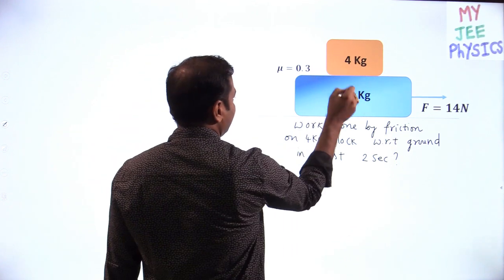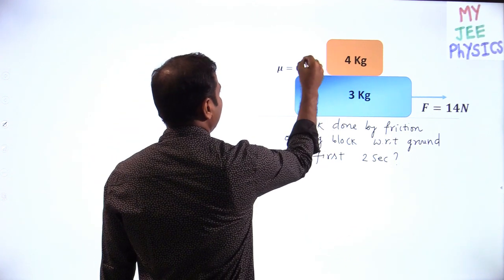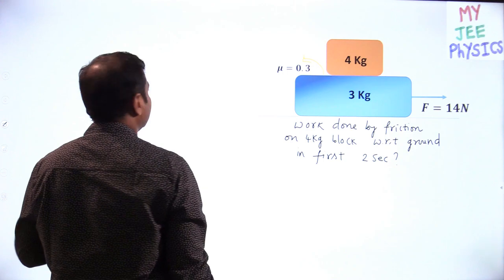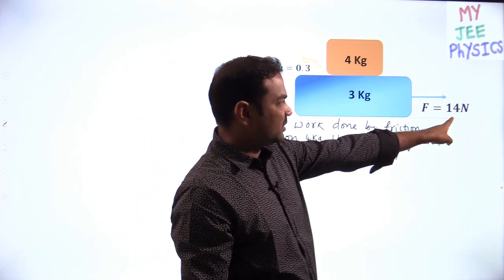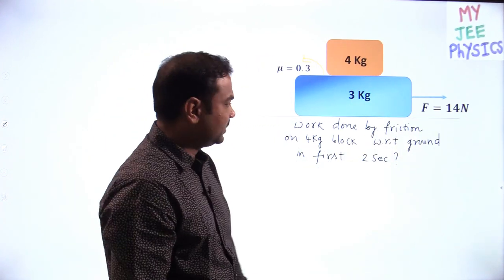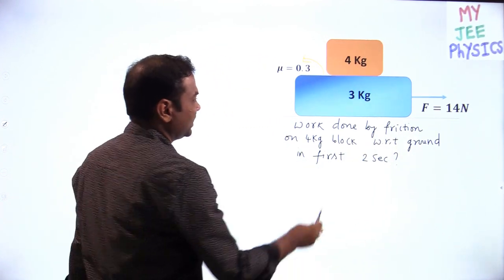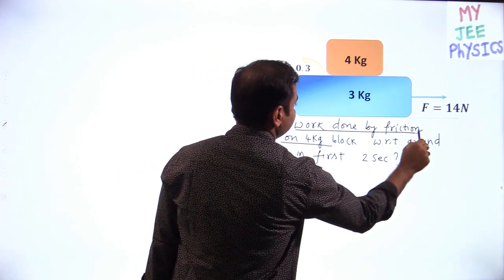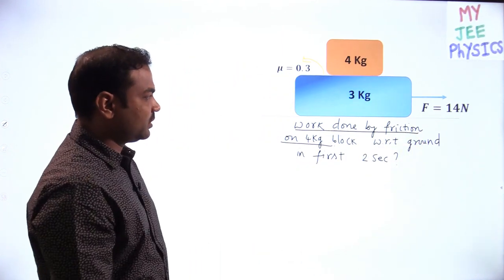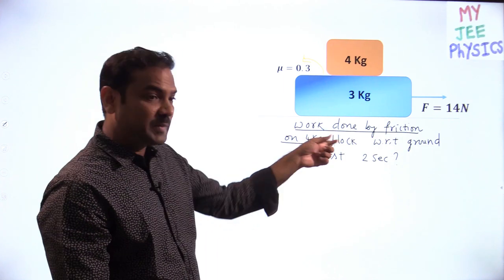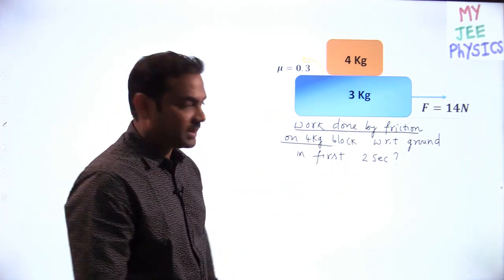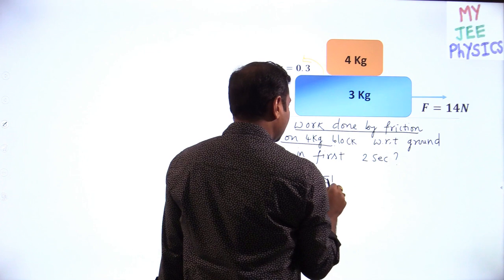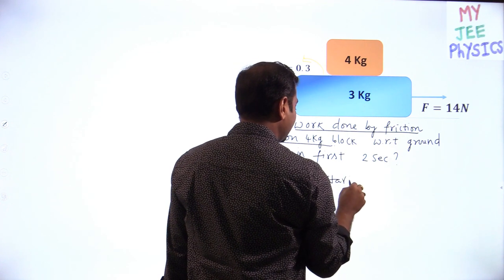There is a 4 kg block and a 3 kg block; the coefficient of friction is 0.3. A 14 Newton force is applied. Find the work done by friction on the 4 kg block with respect to the ground in the first 2 seconds. The entire system starts from rest.